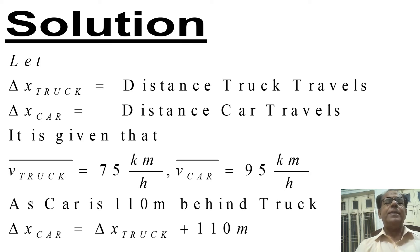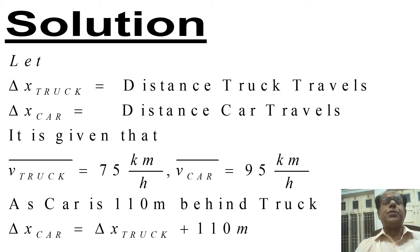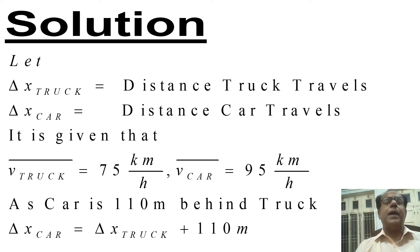The bar notation is used to denote average. As the car is 110 meters behind the truck, Δx_car will be equal to Δx_truck plus 110 meters. This is quite clear because the car is 110 meters behind the truck, so the car must travel that extra distance.